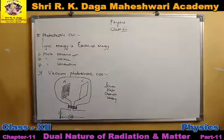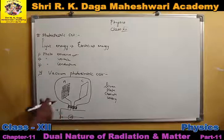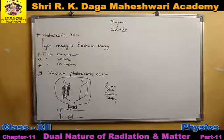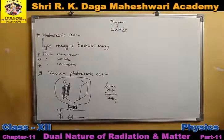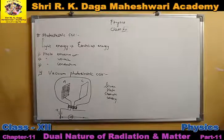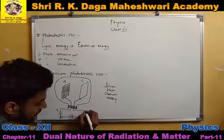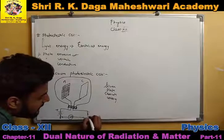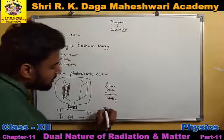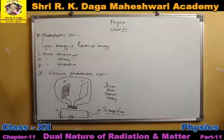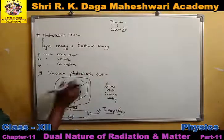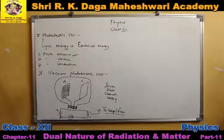Since we are converting light into electrical energy, the electrical energy will be very low — a very feeble electric current will be produced. Since a very feeble electric current is produced, it is necessary to amplify the output. So here we connect it to an amplifier so that it can amplify the amount of electric current obtained. This is how the vacuum photoelectric cell is made.